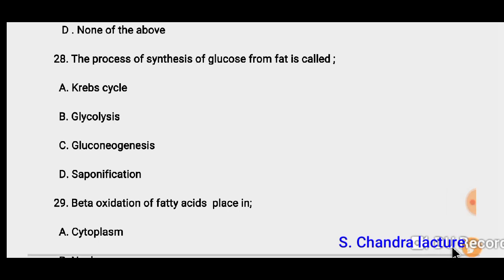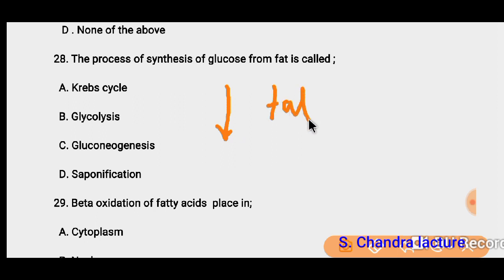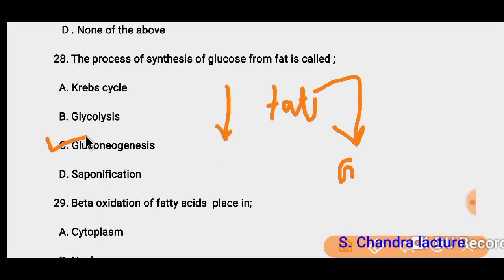Question 28: The process of synthesis of glucose from fat. In the body, if glucose levels are low, fat breaks down and is converted into glucose. So the conversion of fat to glucose is called gluconeogenesis. Here the correct option must be gluconeogenesis.